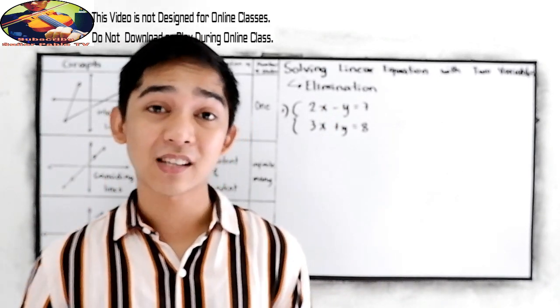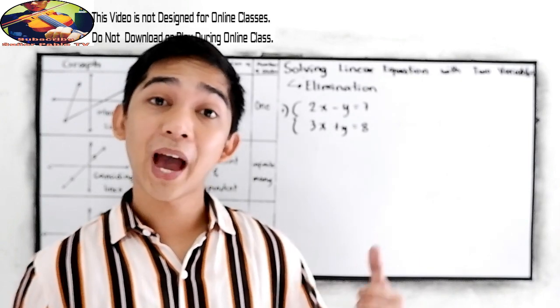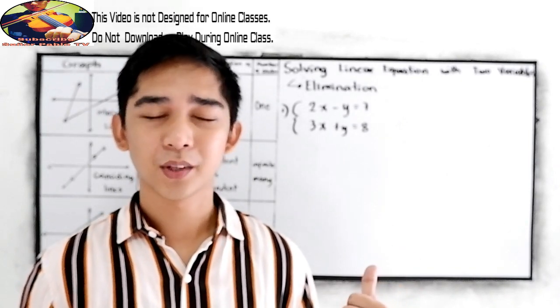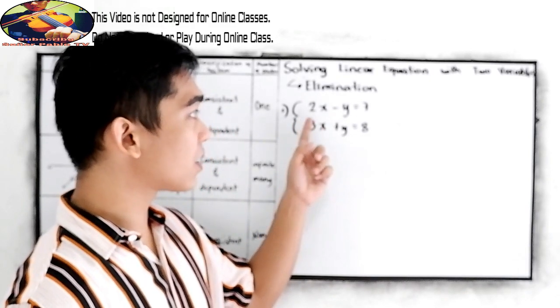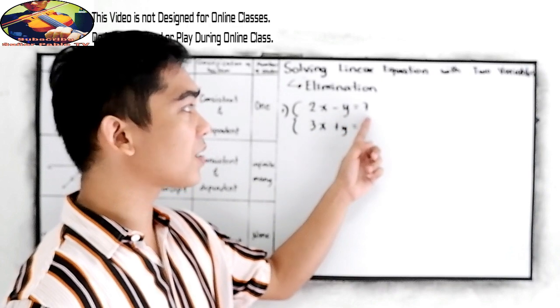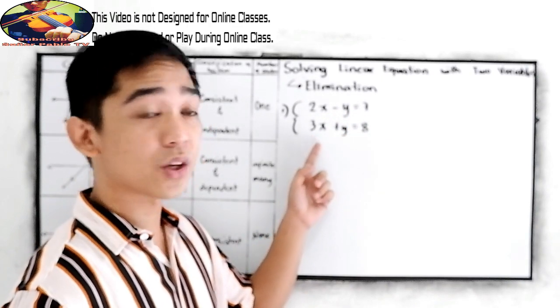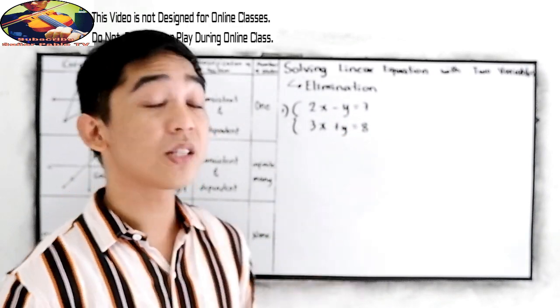So after discussing the substitution method, we have the elimination method. Let's have our first example. Our equation one is 2x minus y is equal to 7, and the second equation is 3x plus y is equal to 8.